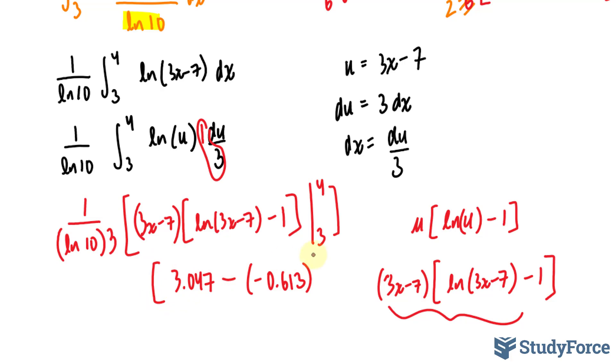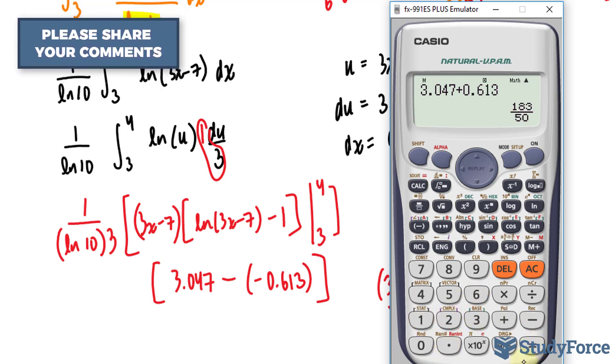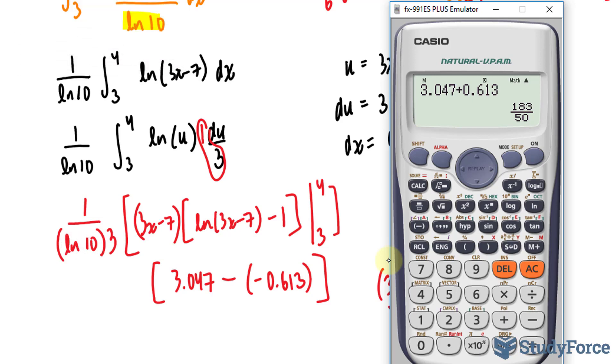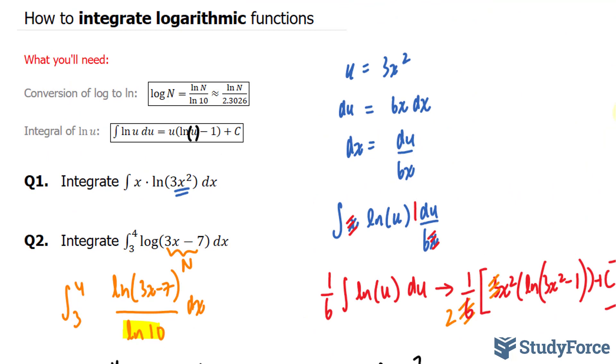Let's find out what that is equal to. 3.047 plus, because that becomes a plus, 0.613. And then I'll divide this by ln 10 times 3. Divide by ln 10 times 3, giving me an answer of 0.53. 0.539. That represents the answer to question 2. And that is how to integrate logarithmic functions.